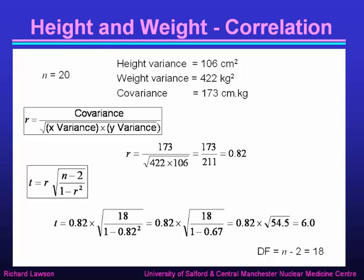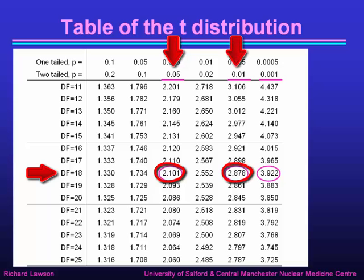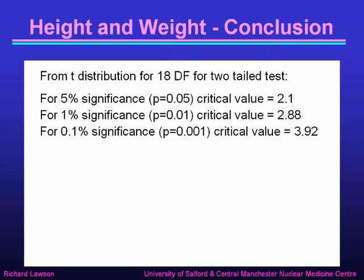We need to check whether this is significant using tables of the t distribution. From the t distribution table with 18 degrees of freedom and for a two-tailed test: the critical value at the 5% significance level is 2.1; at 1% significance it is 2.878; and at 0.1% significance it is 3.922.